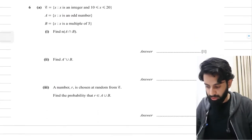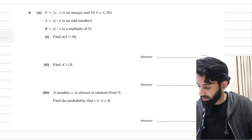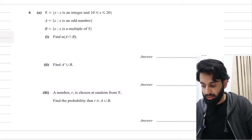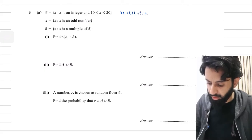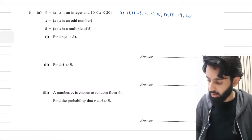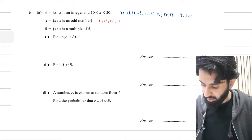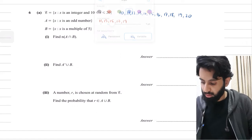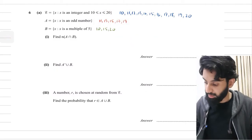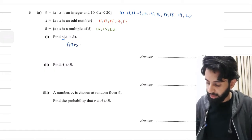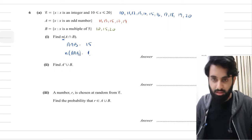Let's solve a couple more questions. Question 6: the universal set contains x such that x is an integer and 10 ≤ x ≤ 20. Let's list the elements: 10, 11, 12, 13, 14, 15, 16, 17, 18, 19, 20. Set A contains all odd numbers: 11, 13, 15, 17, 19. Set B contains all multiples of 5: 10, 15, 20. For A intersection B, the common element is 15, so the number of elements in A∩B is 1.